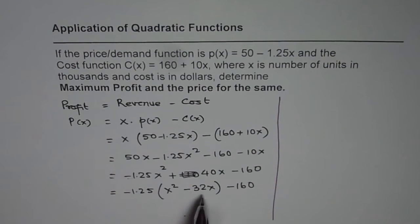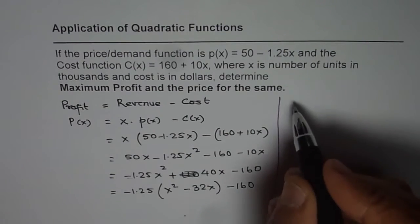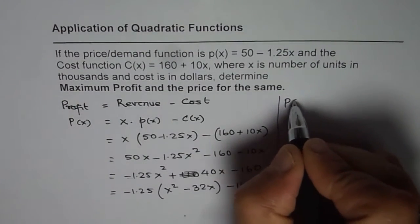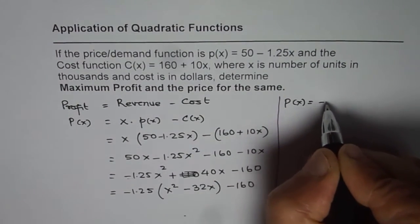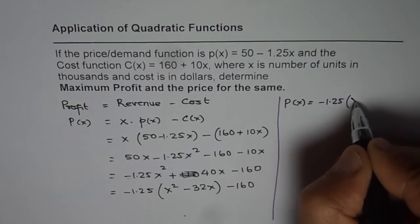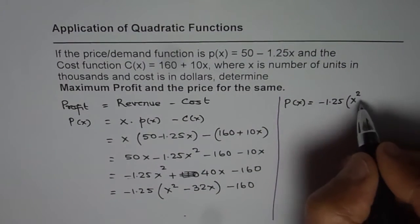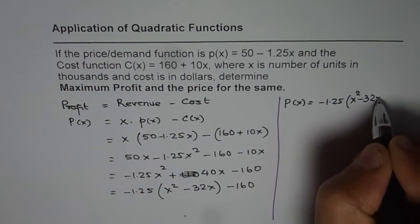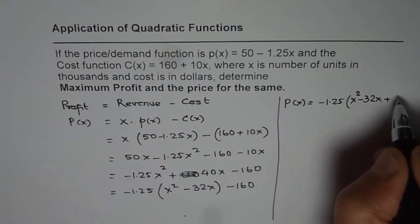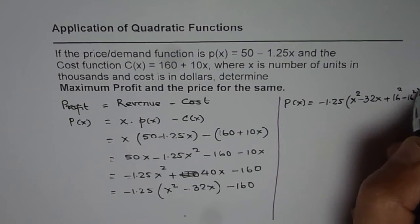Now, to complete the squares, we need to do half of 32 and subtract the square. So we have profit function as equals to minus 1.25 x squared minus 32x plus half of 32 is 16. So we'll add 16 squared and take away 16 squared.